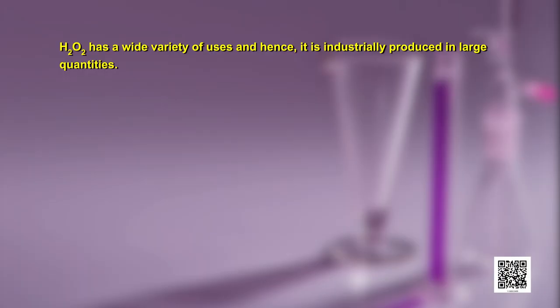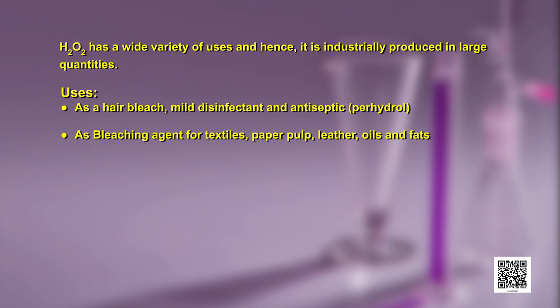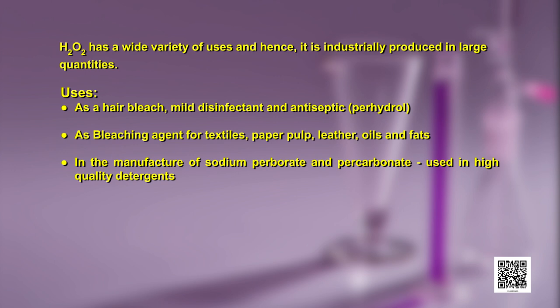Hydrogen peroxide has a wide variety of uses and hence is industrially produced in large quantities. It is used as a hair bleach, mild disinfectant, and antiseptic by the name perhydrol. It is used as a bleaching agent for textiles, paper, pulp, leather, oil and fats. It is also used in the manufacture of sodium perborate and percarbonate, which are used in high-quality detergents.